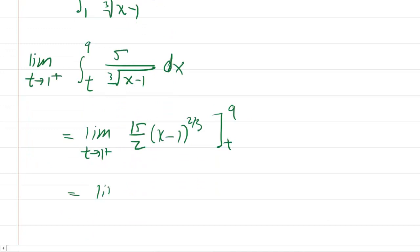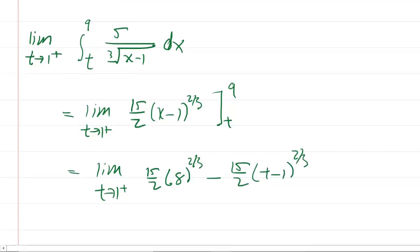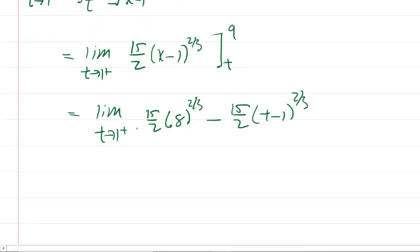We'll plug the upper bound in first. So you're going to have 9 minus 1, which is 8. So we'll go right to it, 8 to the 2 thirds. And then minus 15 halves, t minus 1 to the 2 thirds. Same result here, right, because t is approaching 1. So when you plug 1 in for this t, you're going to get 1 minus 1, which is 0. This whole thing zeros out.